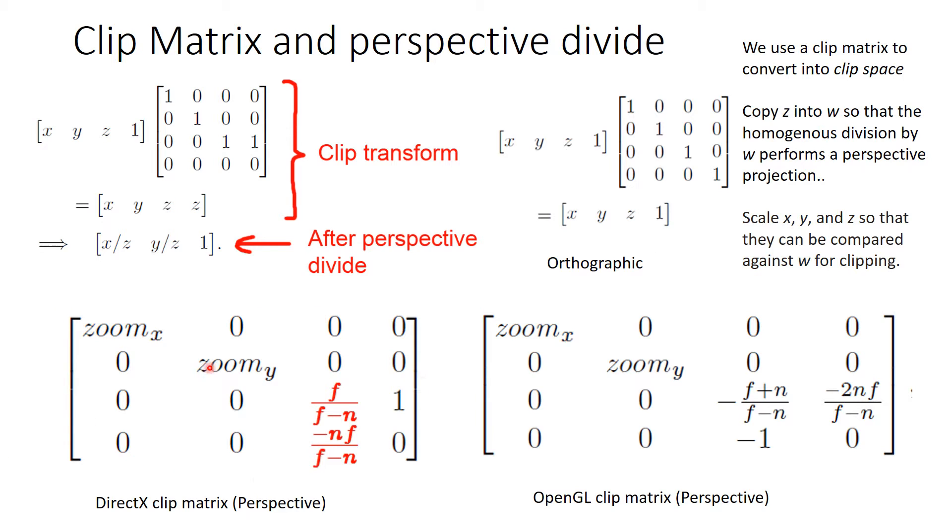Here we have a DirectX clip matrix. It takes into account the zoom and the far and near clipping planes. Note here we have the 1, because this is the perspective matrix. If it was orthographic, the 1 would be here. OpenGL uses column vectors, and so the matrix is transposed. But this again is of the same form here.